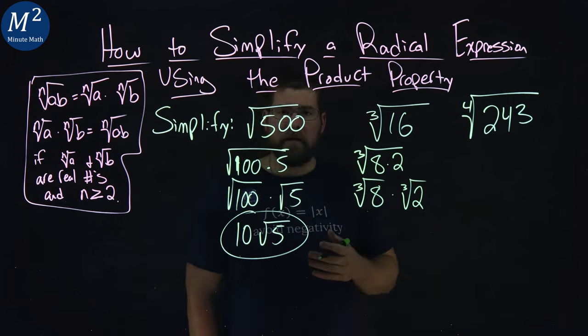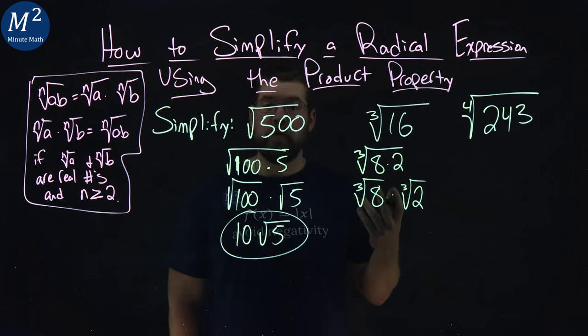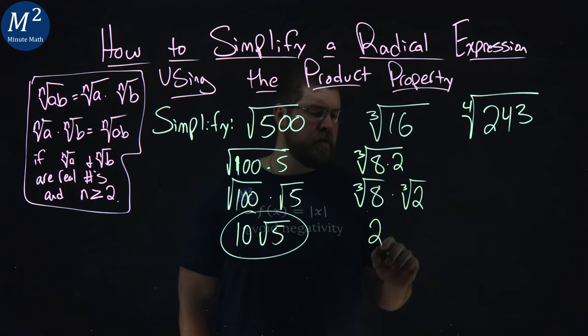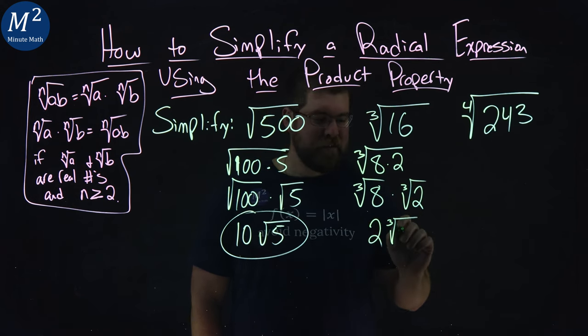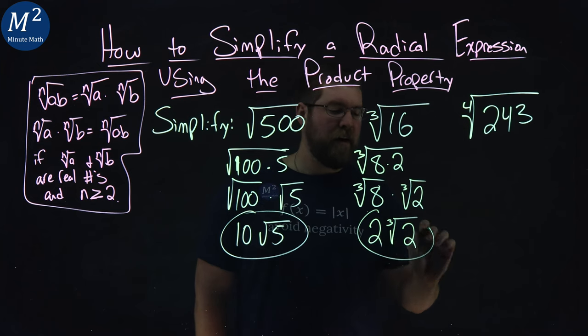Well, the third root of 8 is, 8 being a perfect cube of 2. 2 cubed is 8, 2 to the third power. So we have a 2 here times the third root of 2, and we have our answer.